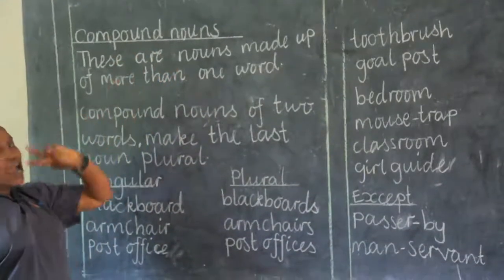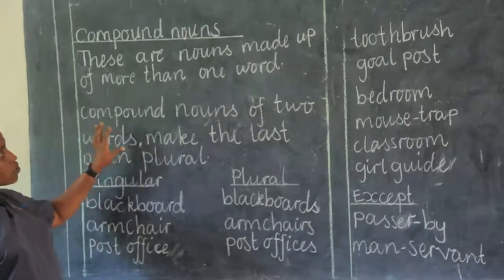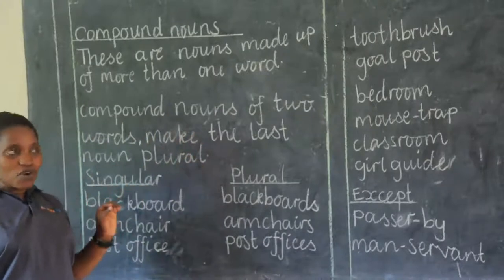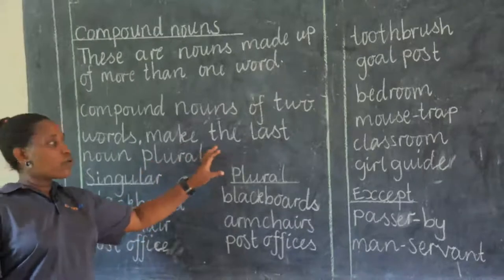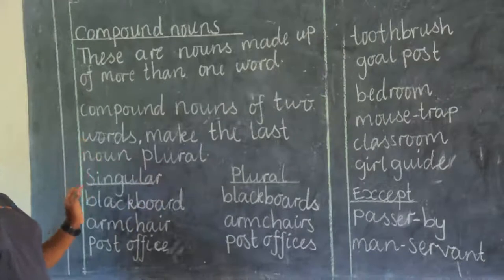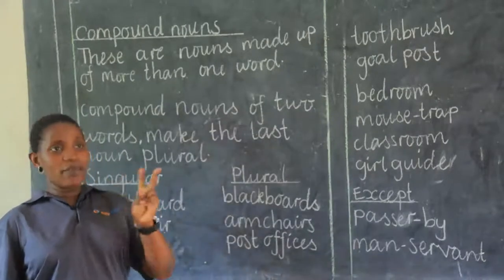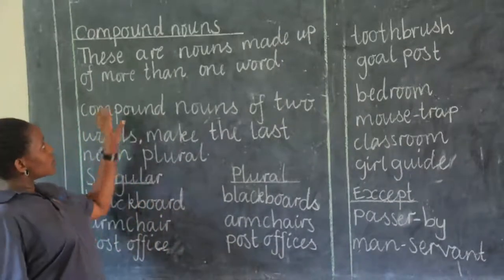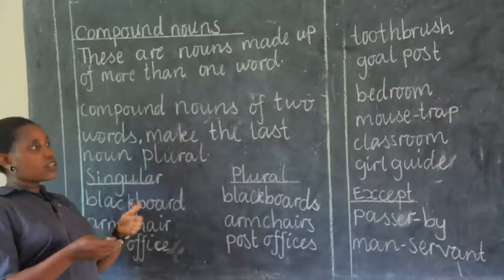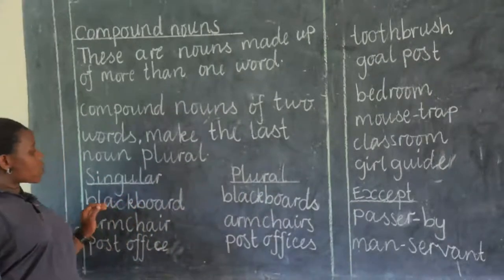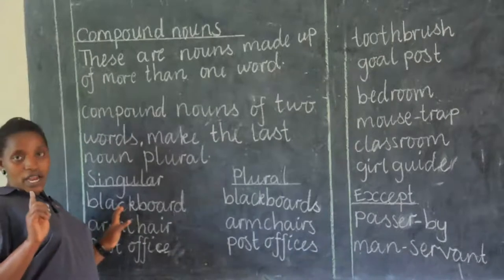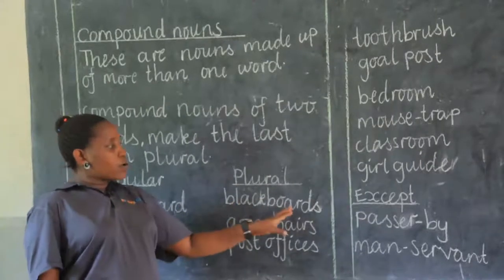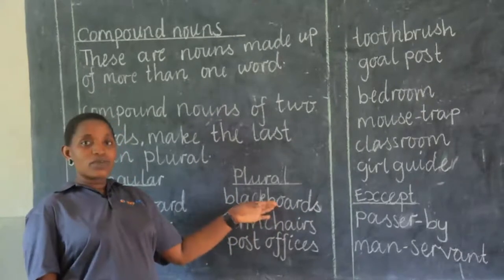These compound nouns are in two categories. We have compound nouns of two words. When we are making compound nouns of two words plural, in most cases we make the last noun plural. For example, when I say blackboard — there is a black color and there is a board. When we join them together, we get a blackboard. When making it plural, black is an adjective, not a noun; the noun is board. So we say blackboards.